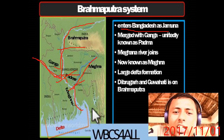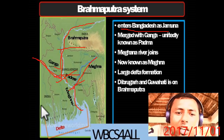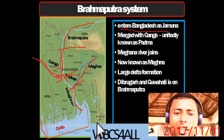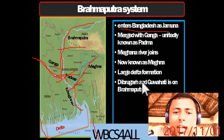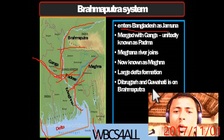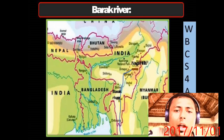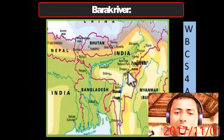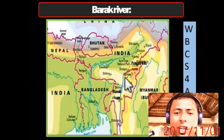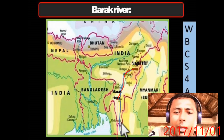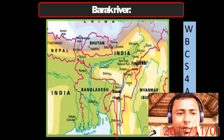The largest delta formation in the world is the Ganga-Brahmaputra Delta. Remember that Dibrugarh and Guwahati are on the Brahmaputra river system. The Barak River originated from the Naga Hills, and the Tipaimukh Dam in Manipur is located on the Barak River.